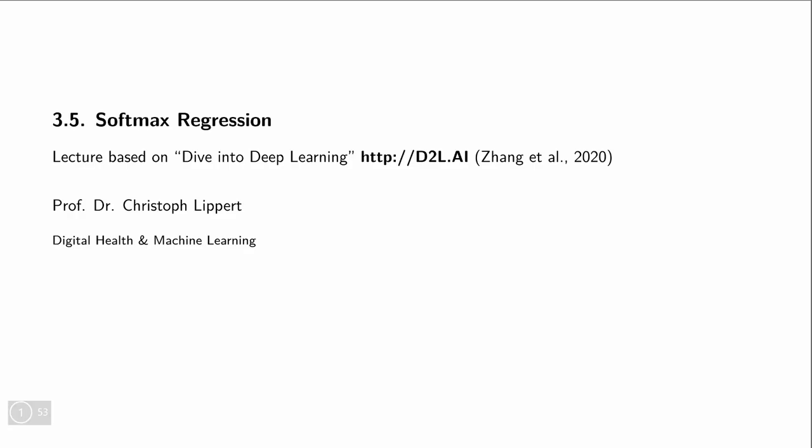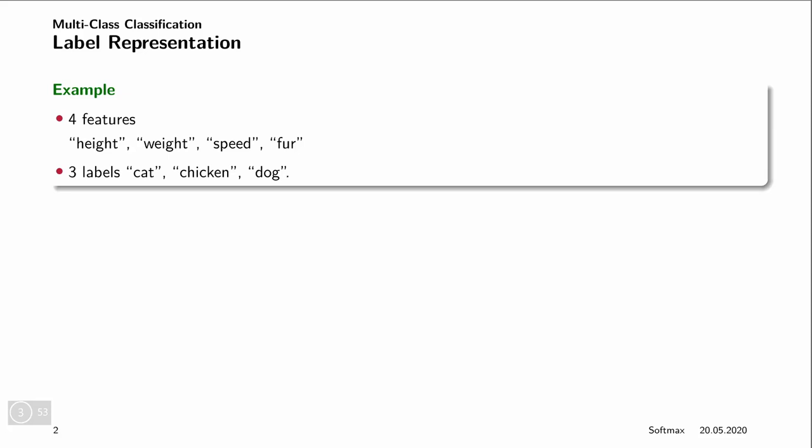The softmax is a slight generalization of the logistic sigmoid that will allow us to do multi-class classification. As a working example, we are predicting the type of animal from four features: the height, the weight, the speed of those animals, and whether the animal has fur or not. The possible animal labels will either be cat, chicken, or dog.